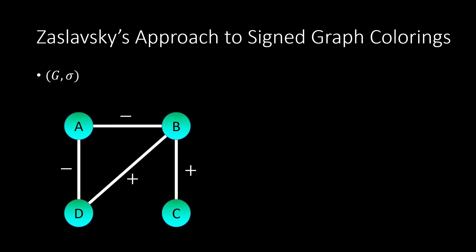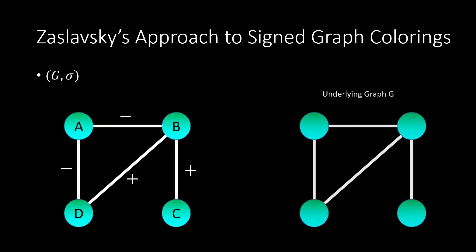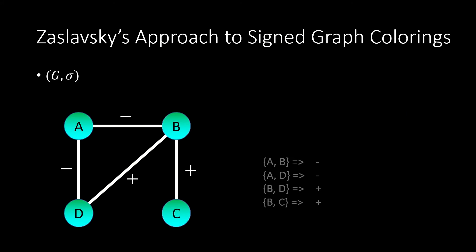To recap, a sign graph G-sigma is a graph whose edges have a positive or negative sign. It consists of an unsigned graph G together with a function sigma that labels each edge with a positive or negative sign.